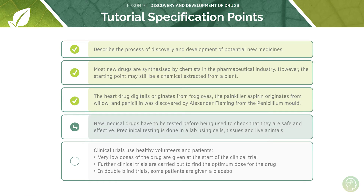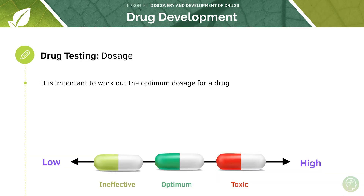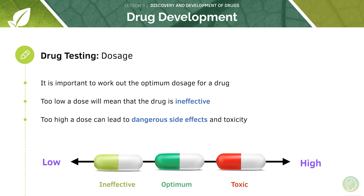After a drug is discovered it must be developed and trialled in order to ensure that it's effective in treating disease and also safe to use. The use of a drug depends on three aspects: dosage, toxicity and efficacy. It's crucial to work out the optimum dosage for a drug — too low a dose will mean the drug is ineffective, and too high a dose could lead to dangerous side effects and toxicity. We need a balance where we get the effects of the drug without causing toxicity, but with enough of the drug so that it's actually effective.